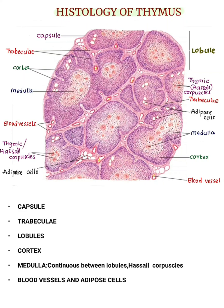Hi everyone, in this video we are going to learn about histology of thymus. Thymus is a lobulated lymphoid organ. It is covered by a thin connective tissue capsule.